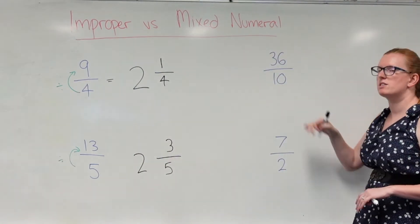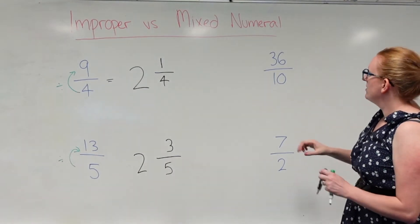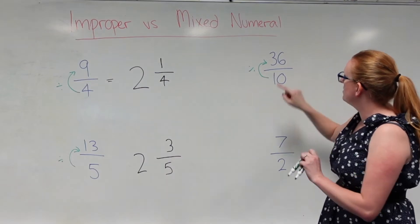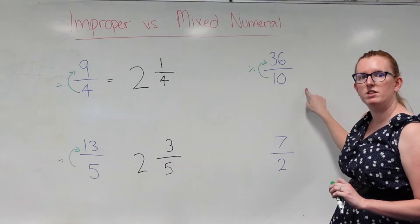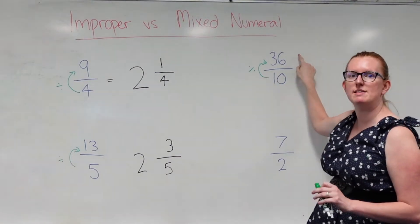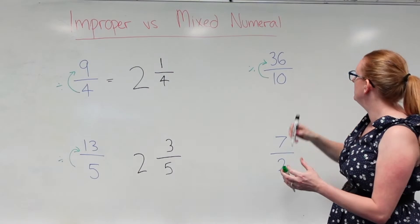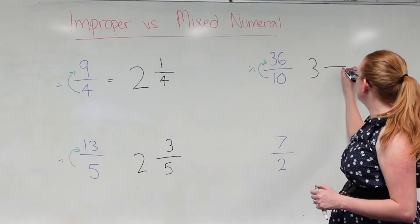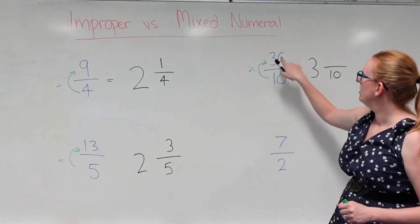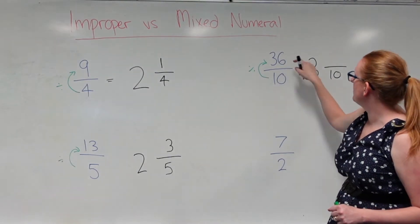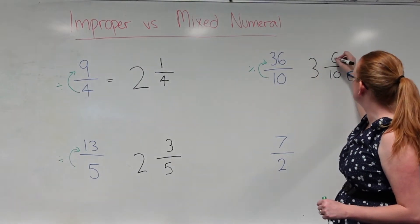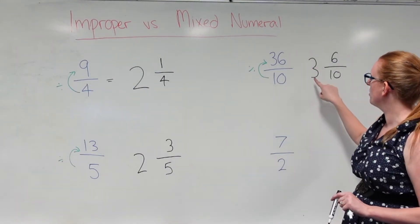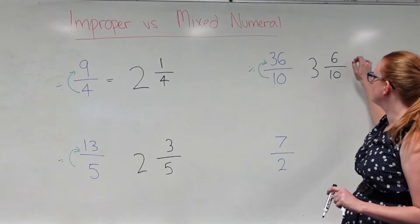Here we've got 36 over 10. I'm going to divide my numerator by the denominator. How many tens go into 36? Three. And how many left over? Remember, my denominator stays the same. Ten threes are 30, so there'd be six left over. So this is equivalent to three wholes and six over ten.